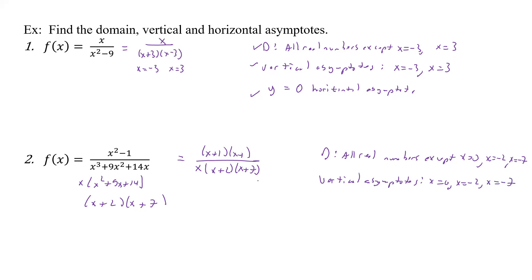Remember, if anything canceled between numerator and denominator, we would remove that asymptote — it would instead be a hole (a point of discontinuity). But this time, all of them stayed, so we keep all three vertical asymptotes. For the horizontal asymptote, the denominator degree is 3 and the numerator is 2, so the denominator is bigger, giving us y equals 0 as our horizontal asymptote. That's all they were asking — just that bit of factoring.